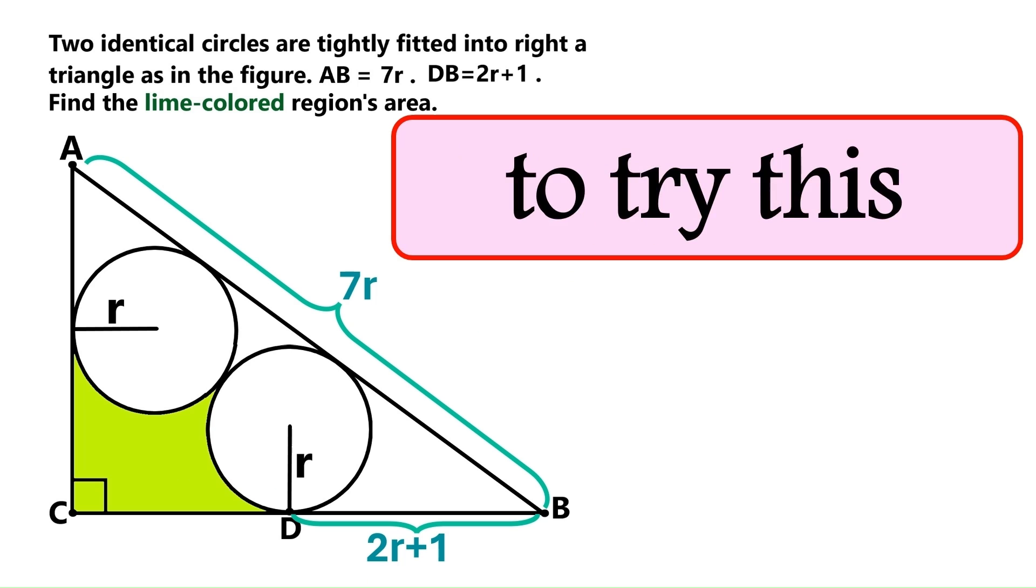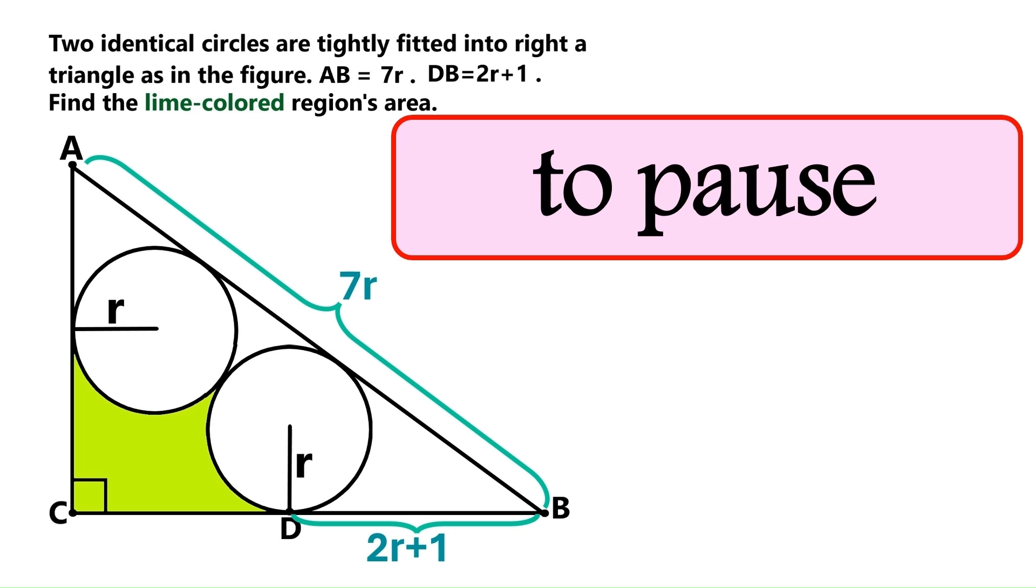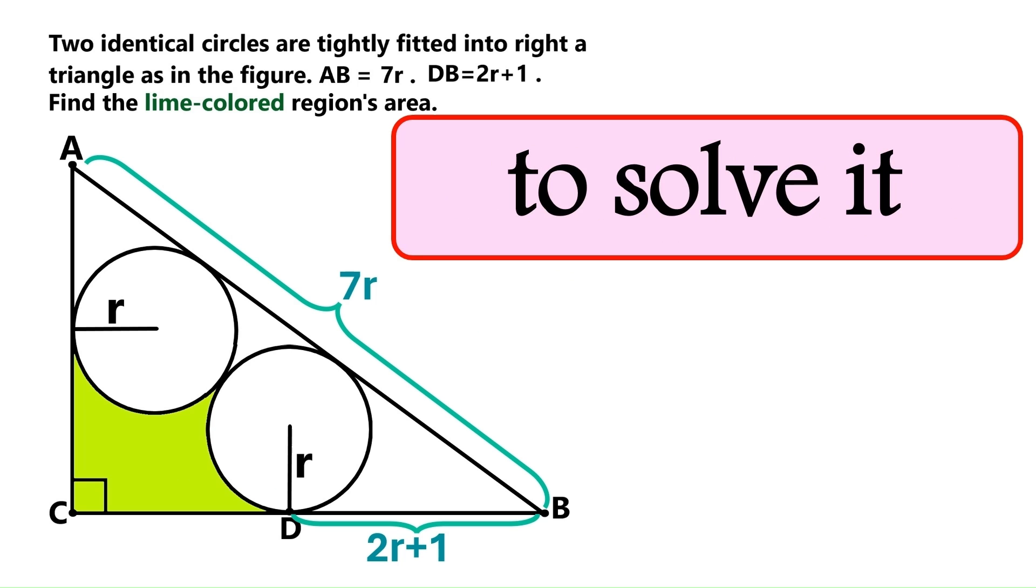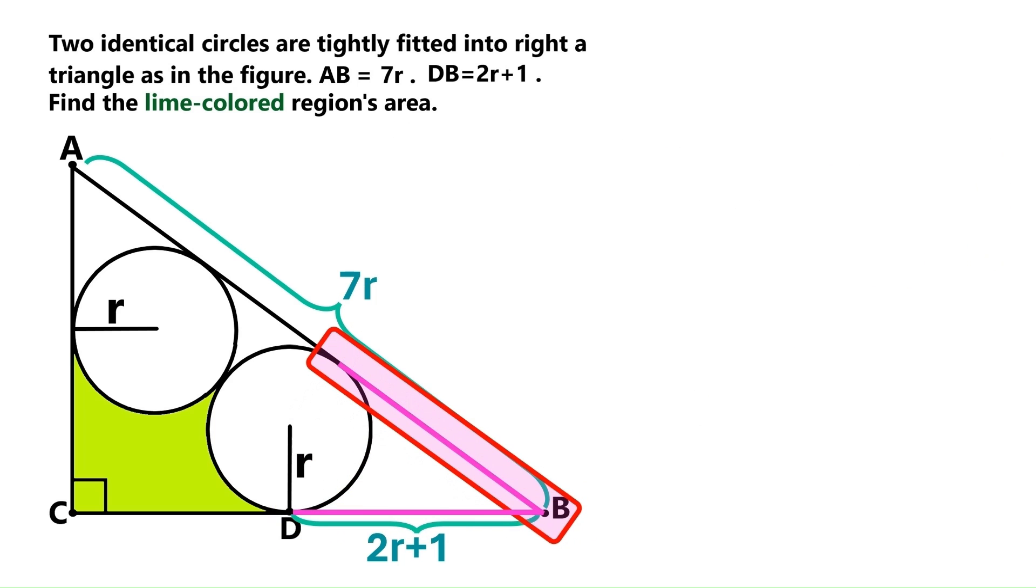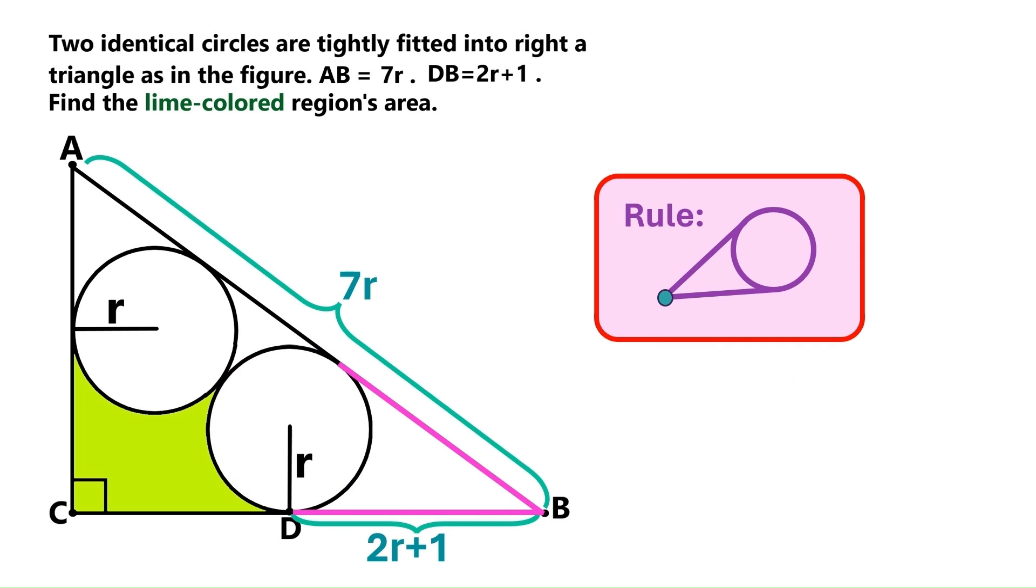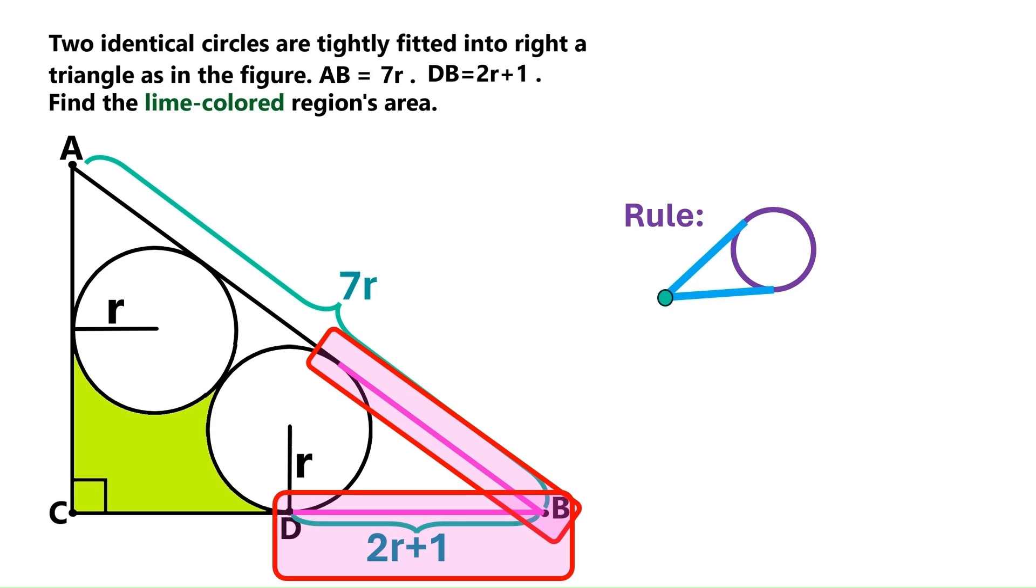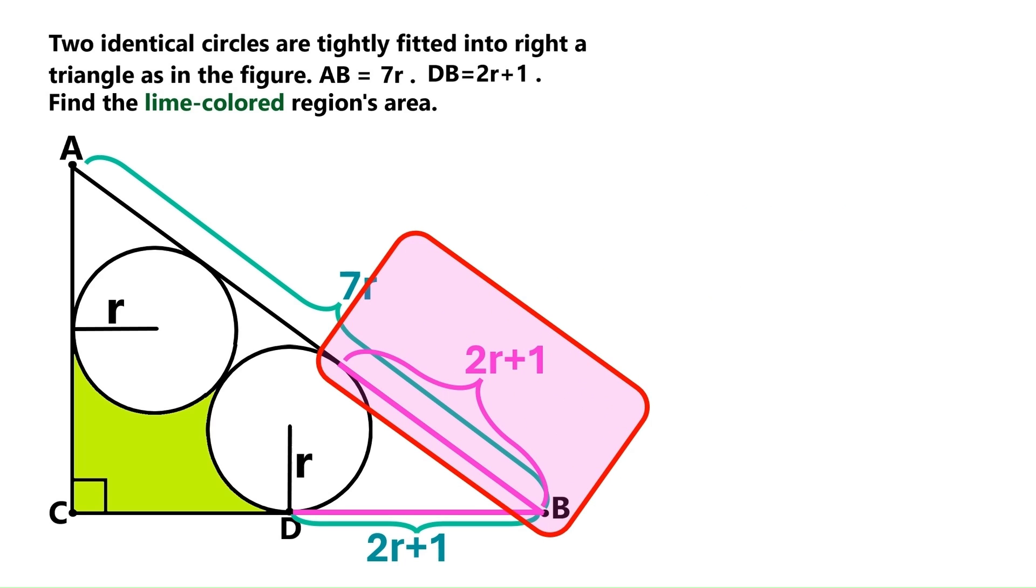If you want to try this on your own, now is the time to pause the video, because I'm starting to solve it right now. This segment and this segment are both tangents to this circle, and they both originate from this point B. We've got this rule in geometry that if two tangents are coming from the same point, their length must be equal. So we can conclude these two segments are equal, and that this segment is also 2r plus 1.